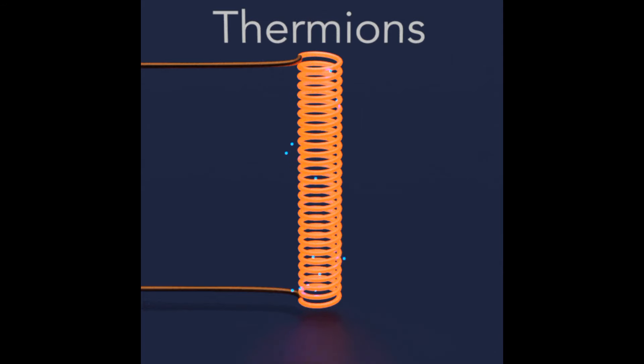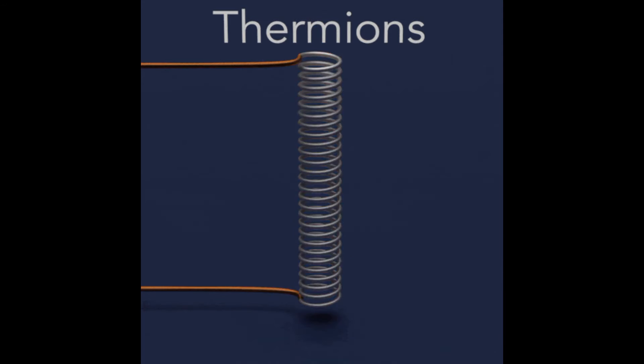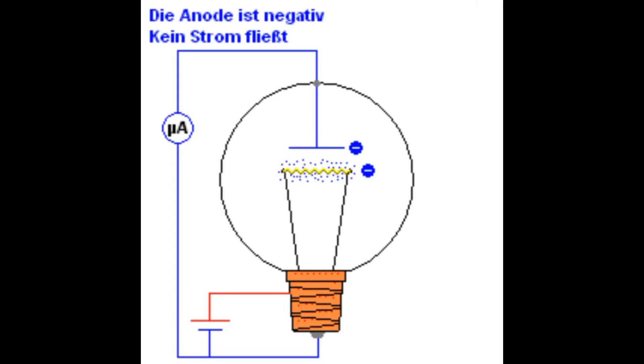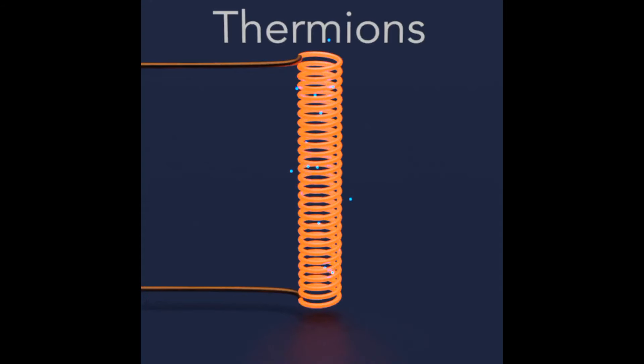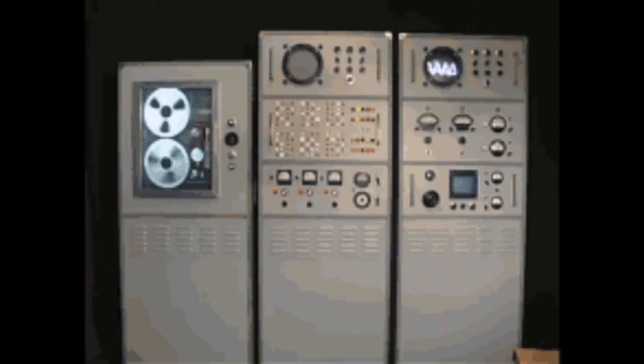In the glow of Edison's laboratory, electrons were observed dancing within a vacuum, liberated from a heated filament. This phenomenon, later termed the Edison effect, laid the groundwork for what would become the mesmerizing world of vacuum tubes.